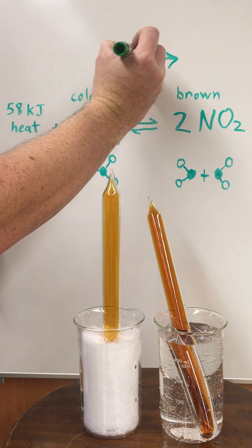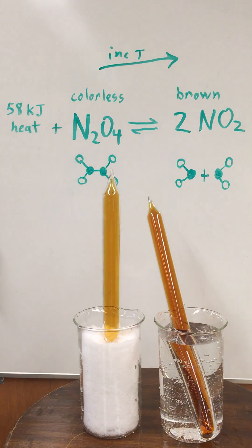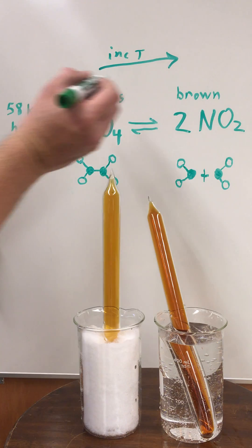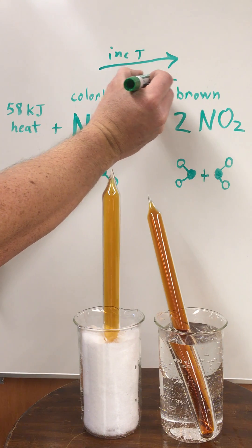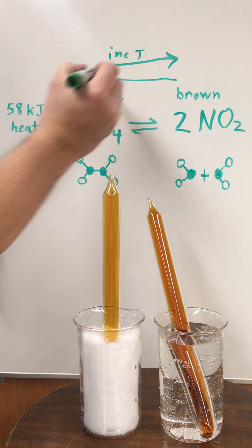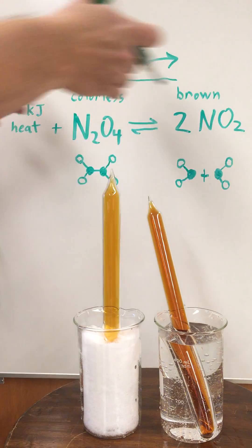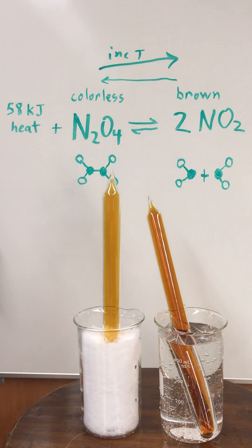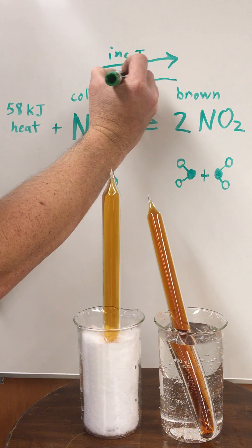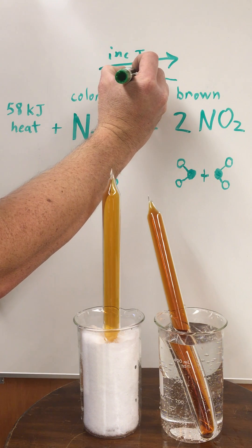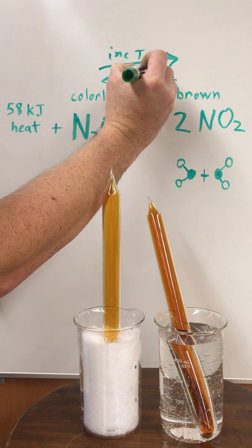So if we increase the temperature, the system will shift to the right. If we decrease the temperature, it's kind of like removing heat out of the system. The system will respond to release more heat and the system will shift towards the reactant side, towards the left.